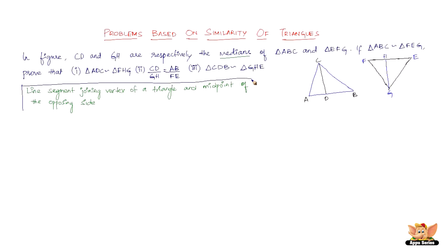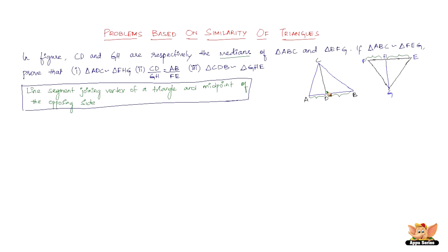So why is this important? It is important to establish a couple of facts here. Since the median joins the vertex and the midpoint of the opposing side, AD and BD are going to be equal, and FH and HE are going to be equal. So AD equals BD and FH equals EH. The median bisects the opposite side of the vertex from which it comes.